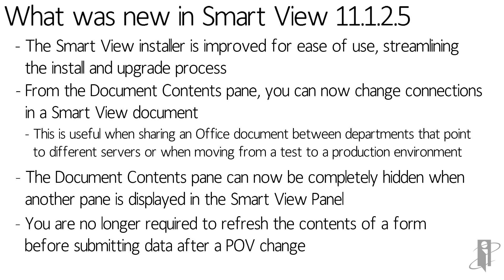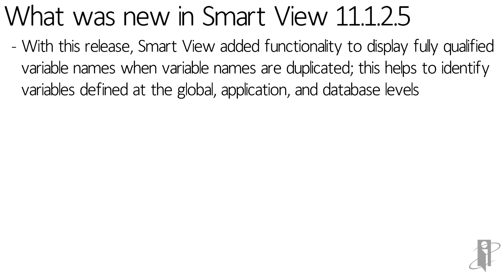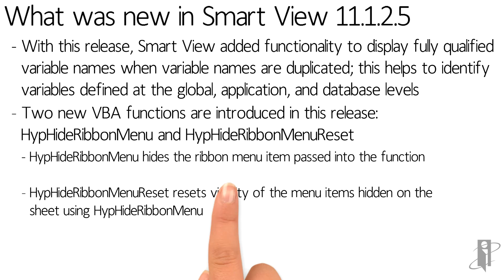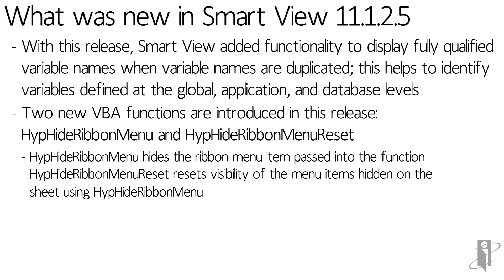We're no longer required to refresh the contents of a form before submitting data after a POV change. You can make a POV change, enter your numbers, and just submit — no problems. Additionally, this release adds functionality to display fully qualified substitution variable names when variable names are duplicated. So if you have global, application, and database level variables in Essbase, you can now select which level to pull that variable from. There are also two new VBA functions: HypeHideRibbonMenu and HypeHideRibbonMenuReset. The hide function hides the Ribbon Menu items passed into it, letting you create a customized ribbon, and the reset puts them back.